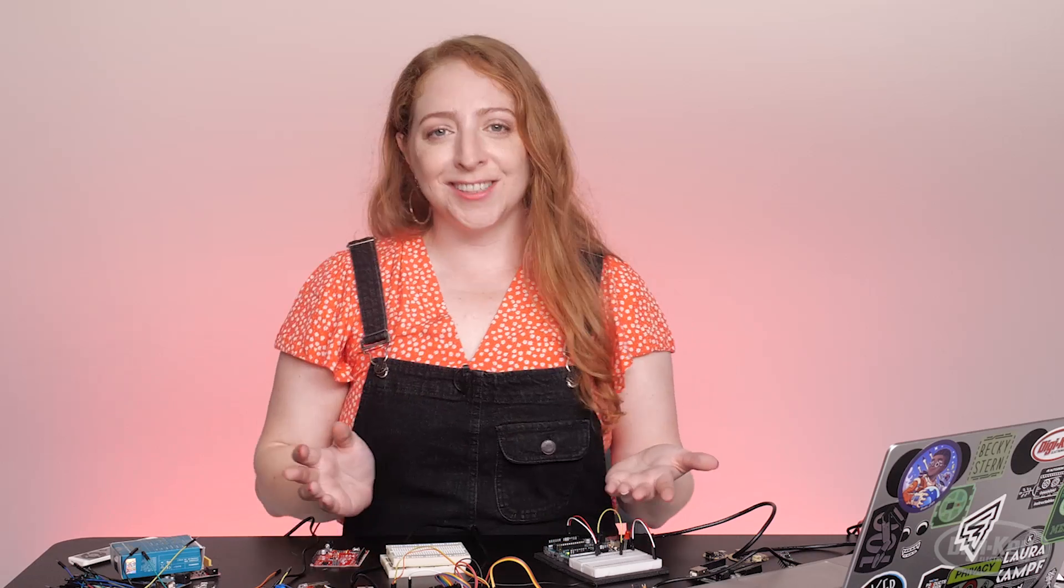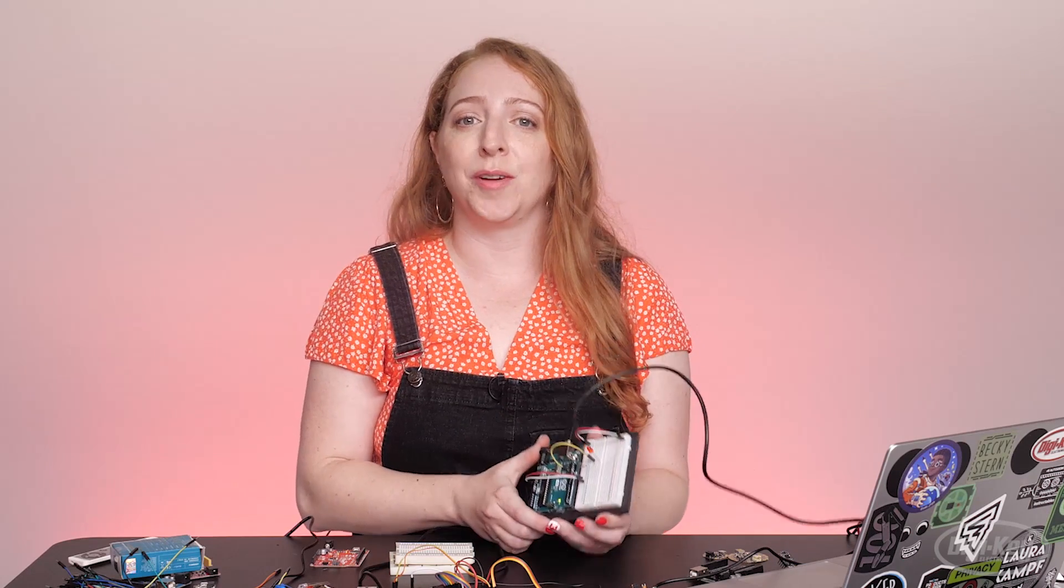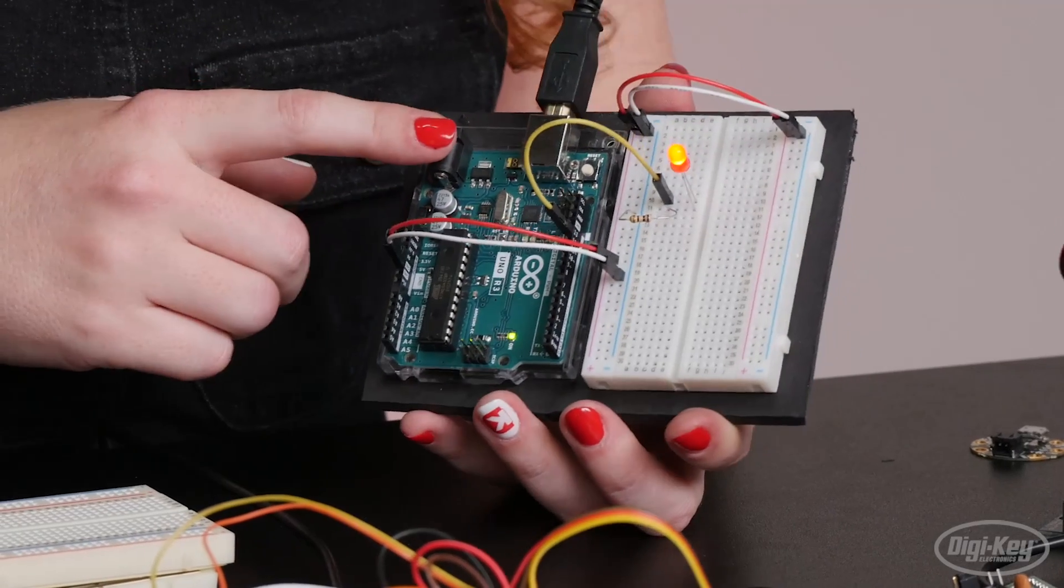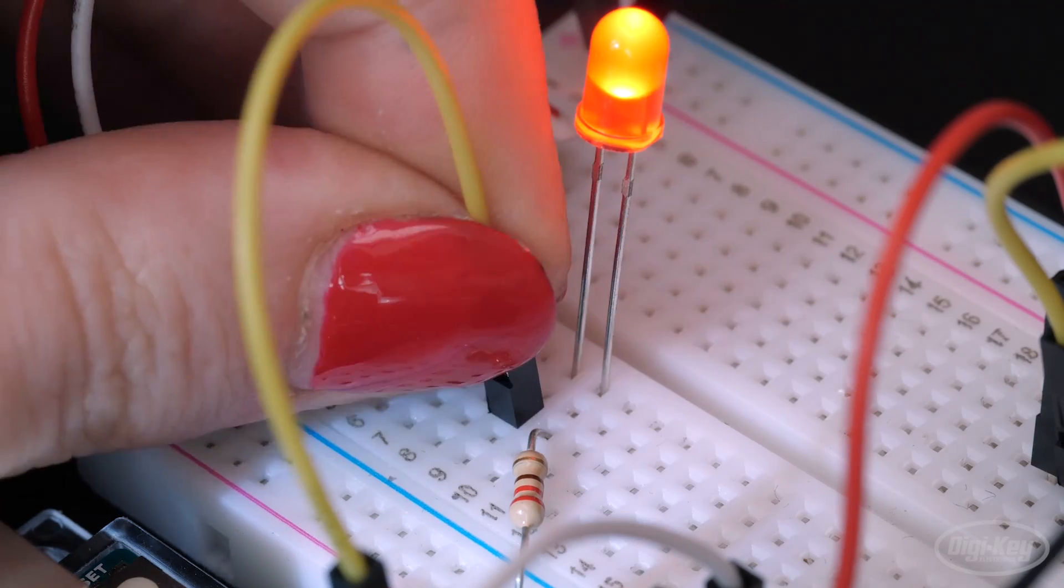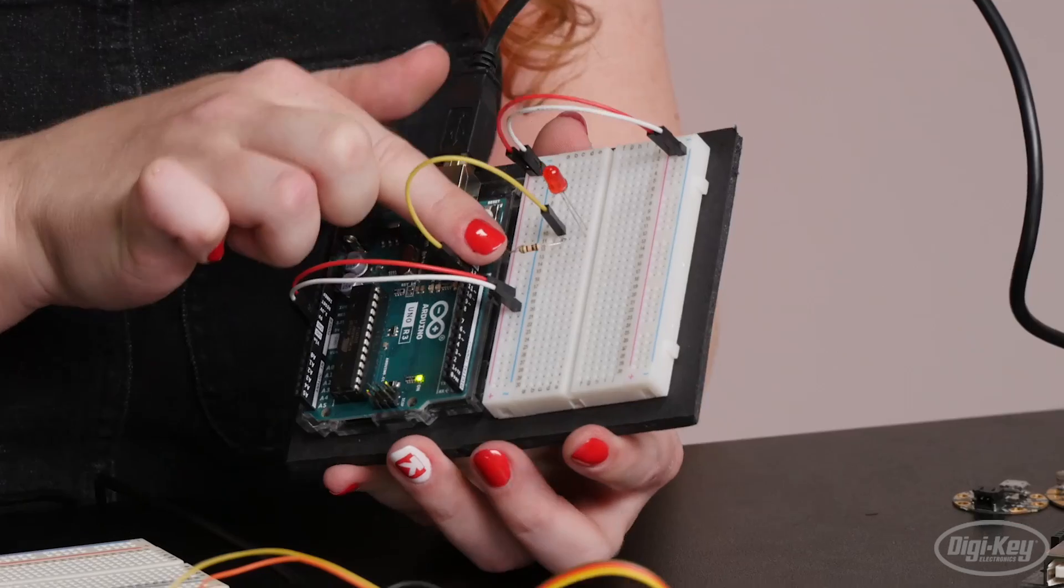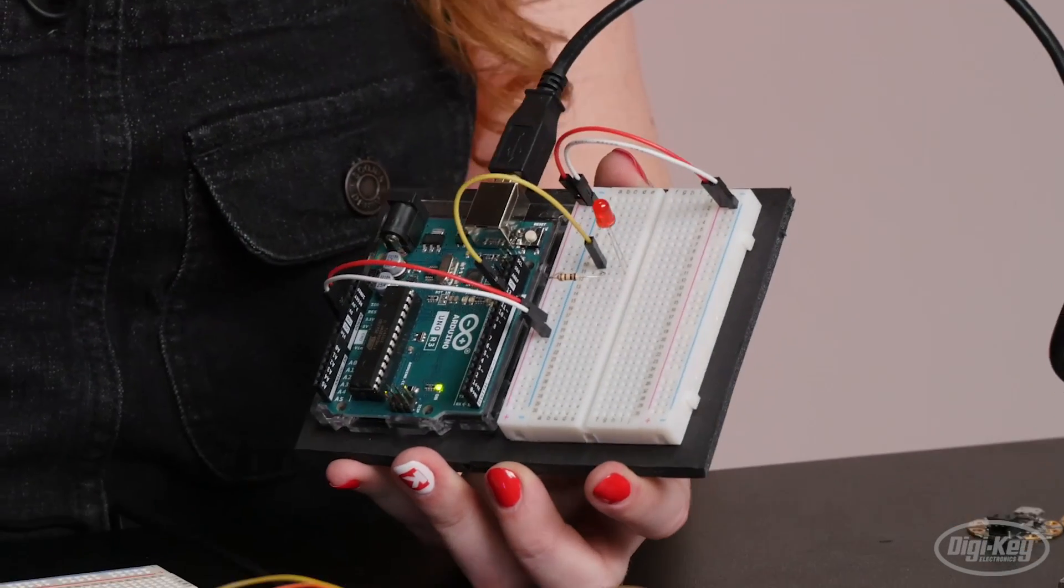Before we get into the software, we can build a simple circuit with the program that comes on the board from the factory, which just blinks an LED connected to pin 13. Pin 13 connects to the longer positive leg of the LED and the negative leg is connected to ground through this resistor, which helps limit the current to prevent the LED from burning out.